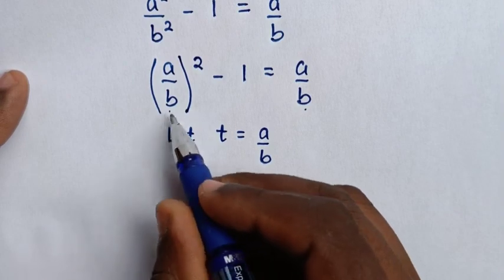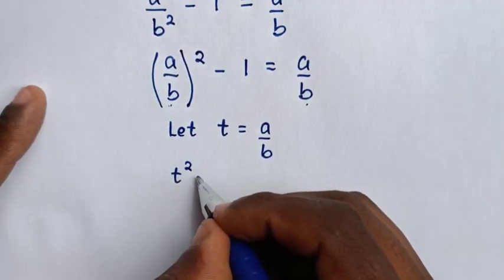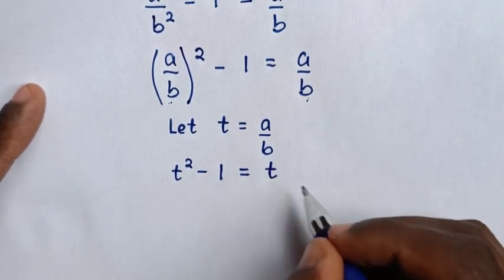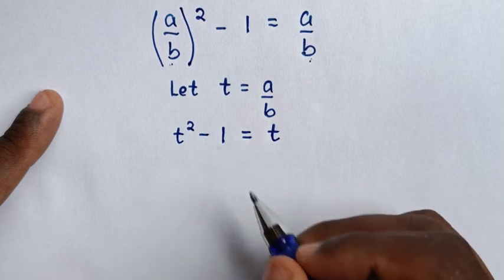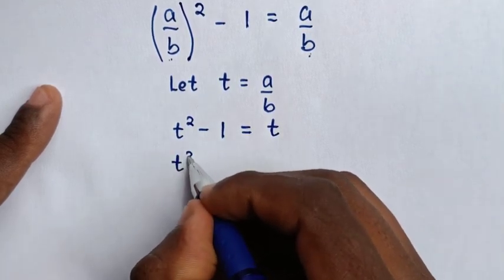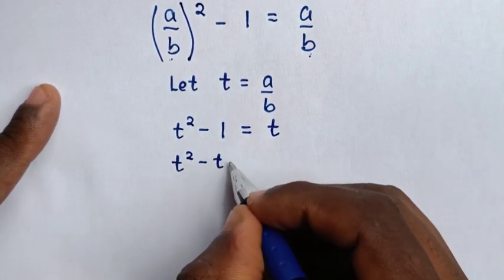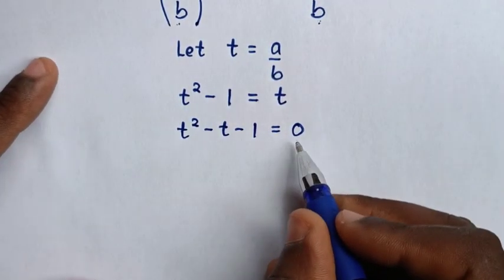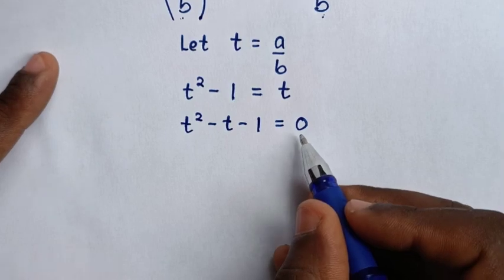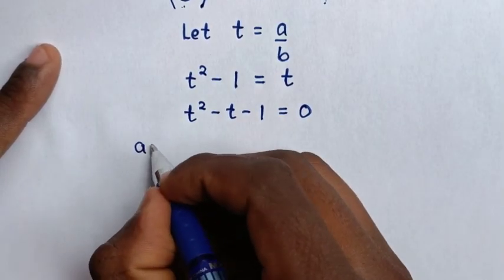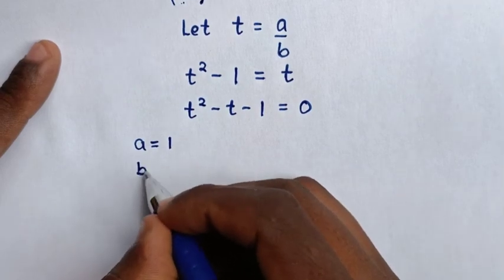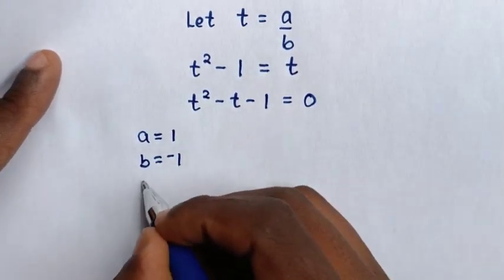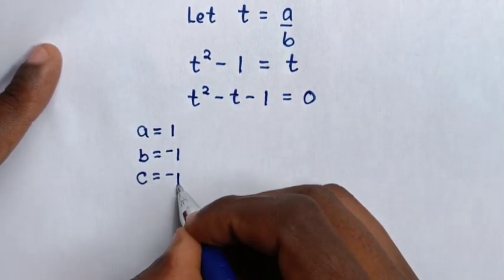So the equation becomes t squared minus 1 equals t. Taking t to the left side gives t squared minus t minus 1 equals 0. To solve this quadratic equation, we use the quadratic formula, where a equals the coefficient of t squared which is 1, b equals the coefficient of t which is negative 1, and c equals the constant which is negative 1.